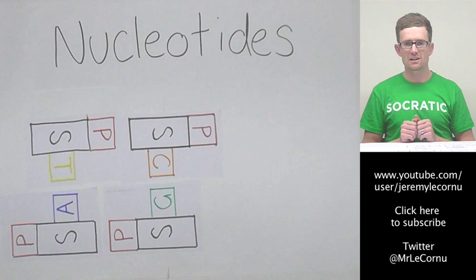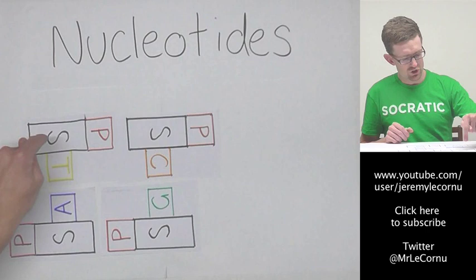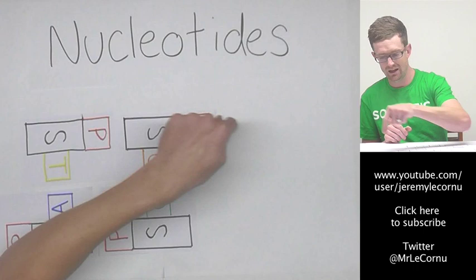Now you'll notice in the orientation that I've now put them, the sugar and the phosphate repeat. We have sugar, phosphate, sugar, phosphate. If we were to continue, you would continue to see that, with sugar, phosphate repeating on and on and on.